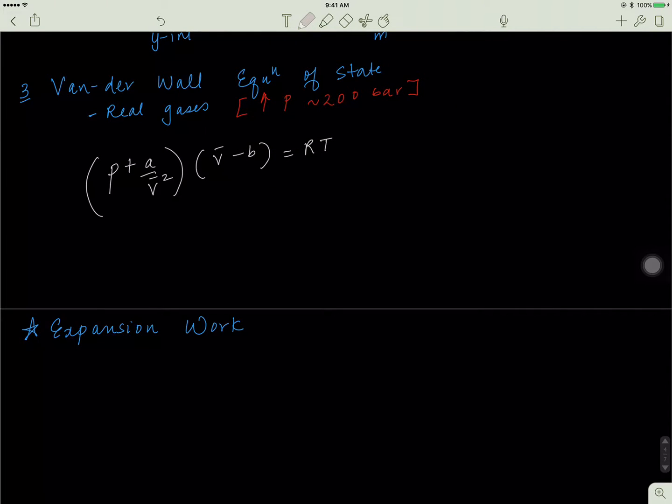Remember our first assumption in kinetic theory that the molecules don't occupy space? Well we're gonna slash that away and say they actually do occupy space and they occupy the space as a sphere with some radius R.